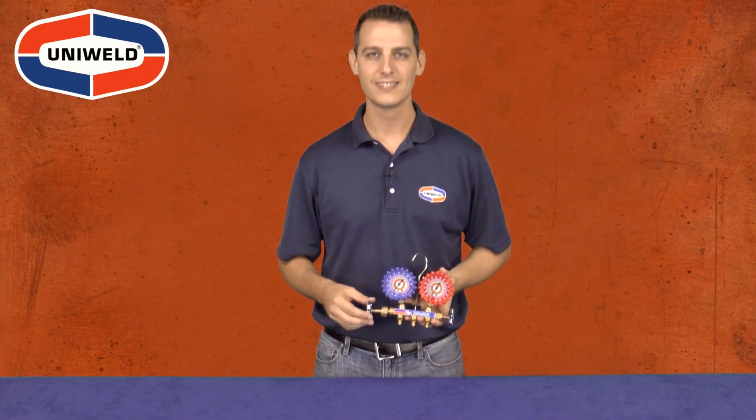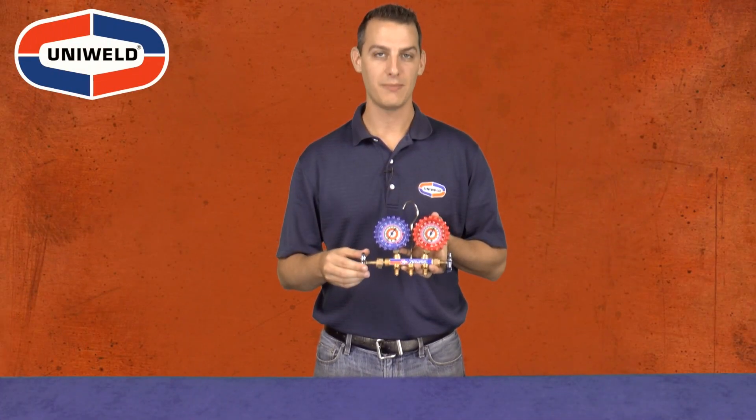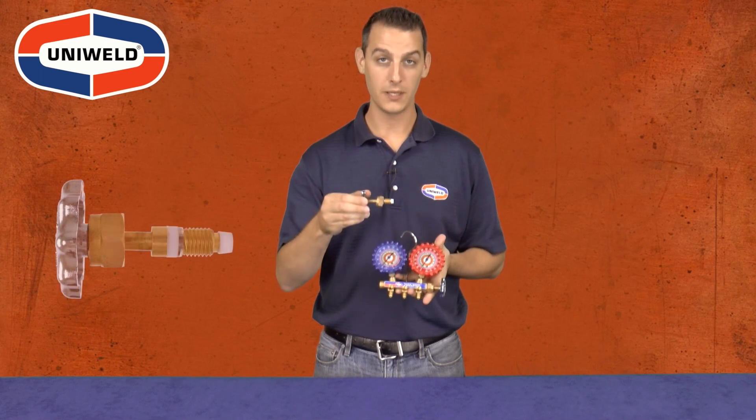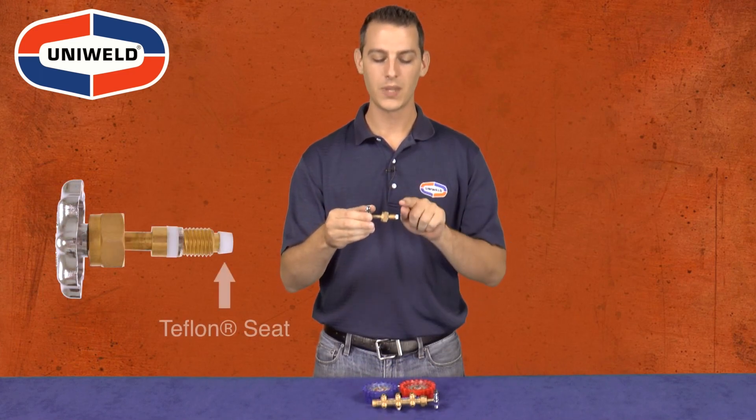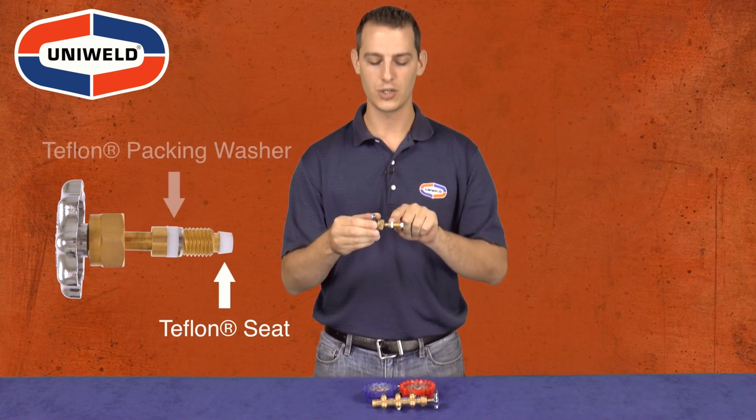Hi, Matt here with Uniweld Products. Uniweld's two-valve brass manifold has a valve stem assembly with a Teflon seat and a Teflon packing washer.